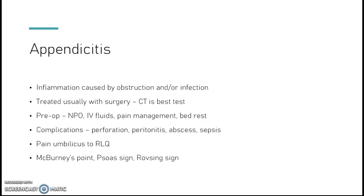Preoperatively: nothing by mouth, IV fluids, pain management, and bedrest. Complications can include perforation, peritonitis, abscess, and sepsis. The classic presentation is pain around the umbilicus that radiates to the right lower quadrant. However, some people have different anatomy — I've seen people with flank pain or even left-sided pain have appendicitis, so always keep it in your differential diagnosis.